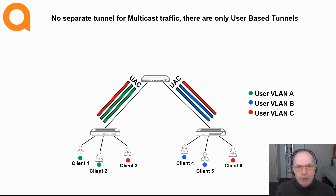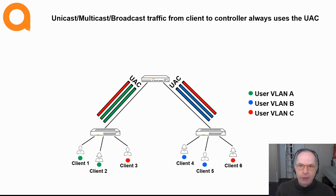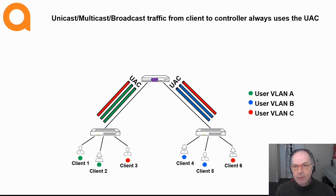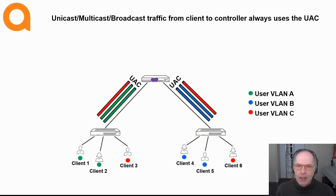Let's first check out the upstream traffic, so traffic from the tunneled devices. Multicast traffic coming from the tunneled devices always uses the dedicated tunnels. So in other words, a multicast coming from client 1 always uses the dedicated tunnel of client 1, and client 5 always uses the dedicated tunnel of client 5. This is very straightforward and also very secure because each client is completely isolated from the other clients.